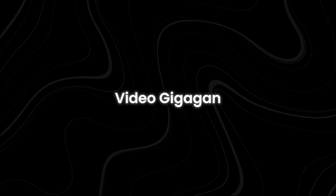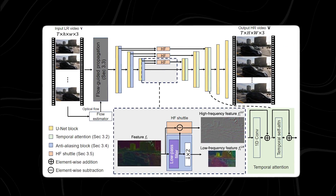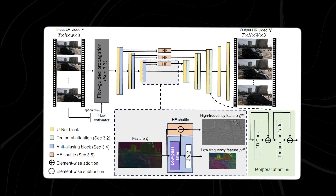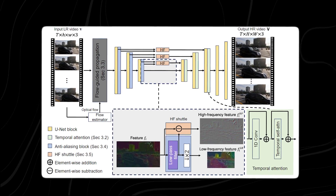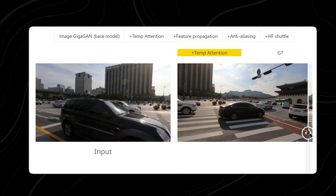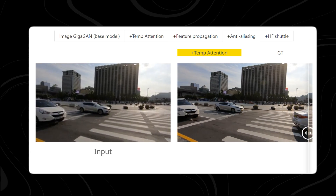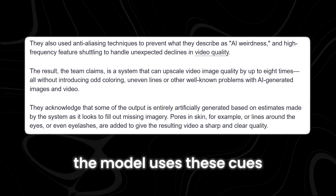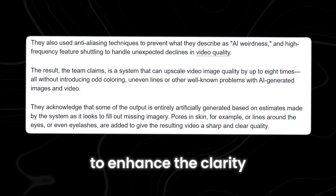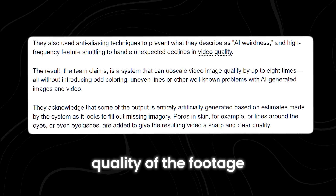The magic behind Video Gigagan doesn't end there. To kick-start the process, the upsampler undergoes a process of expansion, which involves infusing temporal attention layers into the decoder blocks. This enables the model to comprehend and exploit temporal information stored in the video frames. Essentially, the model uses these cues to enhance the clarity, sharpness, and overall quality of the footage.